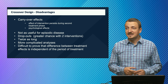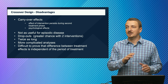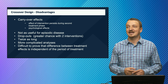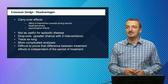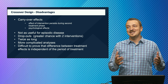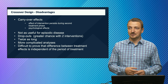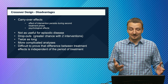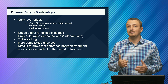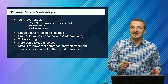Crossover design is not as useful for episodic disease — not a constant pain or constant condition, but something that goes up and down — because this may confound the severity of a disease between the two interventions in the same patients. Dropouts are also a concern: you don't need to enroll as many patients, but at the same time it is a longer trial, so there is a greater chance a patient may drop out. It is also twice as long, which is something to consider for planning and budgeting. It has a more complicated analysis, and it is difficult to prove that the difference between treatment effects is independent of the period of treatment.